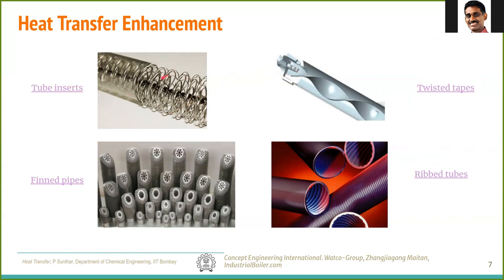The first method is tube inserts — a spring-like structure inserted inside the tube that touches the outer wall. Being metallic, this insert gets heated to roughly the same temperature as the tube surface. When liquid passes through, it has a larger surface area of contact. This acts like an extended fin, transporting heat from the surface to an increased effective surface area.